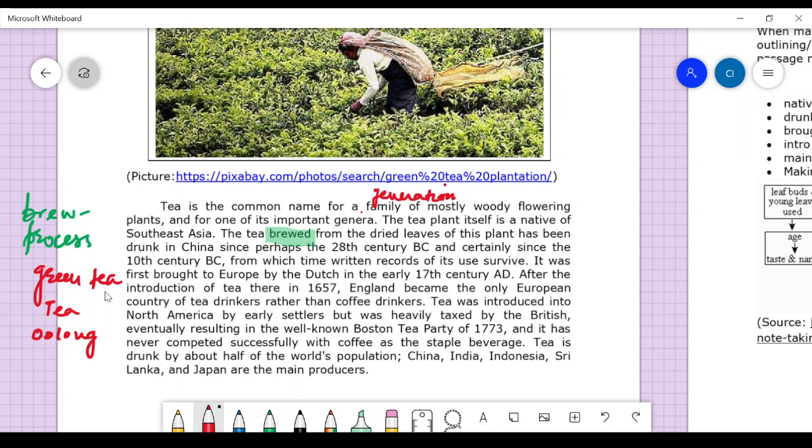The most common is brown tea derived from dried leaves. Green tea preserves the aromas because when you cook too much, properties are lost. Tea from the dried leaves of this plant has been drunk in China since perhaps the 20th century BC, and certainly since the 10th century BC, from which time written records survive.